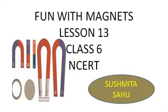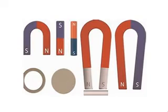Let's start with magnets. On the screen you can see different types of magnets. Everybody knows that a magnet attracts iron, and that is why we find it so fascinating. The magnetic force is a non-contact force — without coming in contact it attracts something towards it. Some magnets are straight and some are U-shaped.